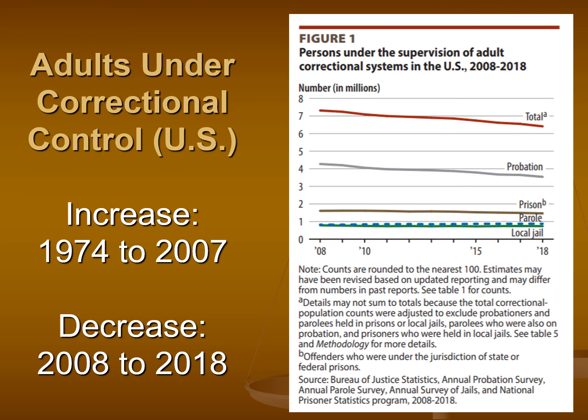This next slide shows 2008 to 2018. Looking at that red line at the top — the total persons under supervision of adult correctional systems — we're finally starting to see a decrease. This means that either we've changed our habits as far as punishment and corrections goes, or we're getting better outcomes, or maybe we're missing individuals. We'll unwrap all these layers going forward.